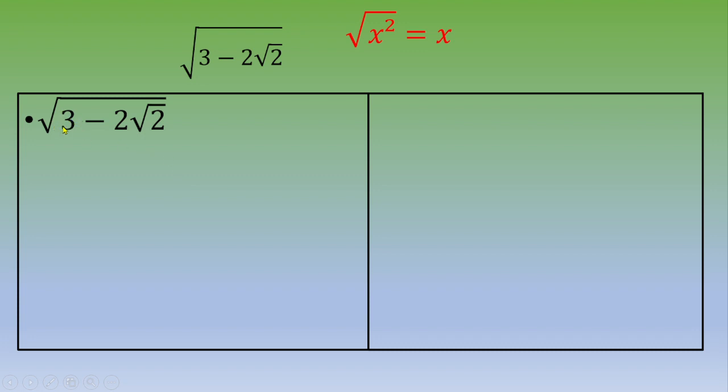This quantity is 3 minus 2 square root of 2. You can notice there is a minus sign. If you want to transform that into a perfect square, we can recall this remarkable identity: a minus b squared equals a squared minus 2ab plus b squared. So let's transform this quantity.